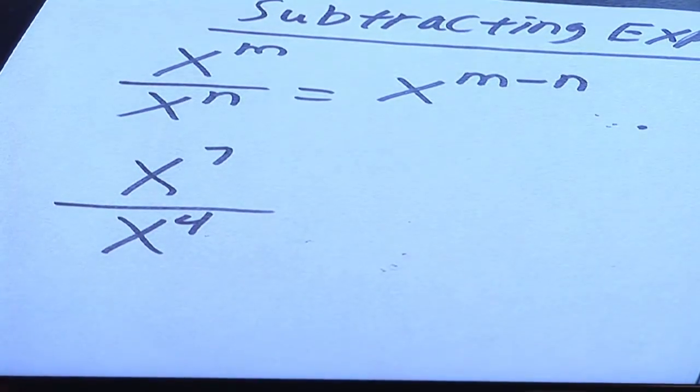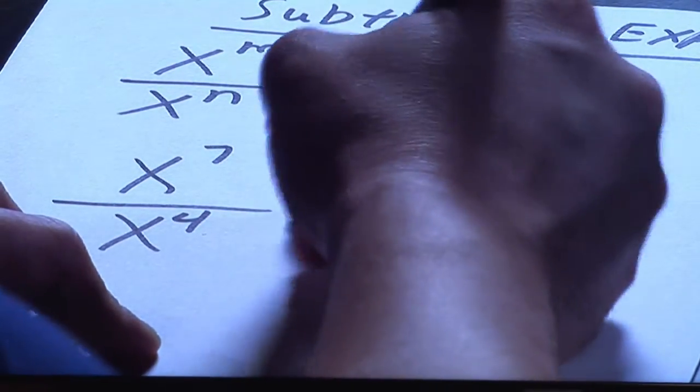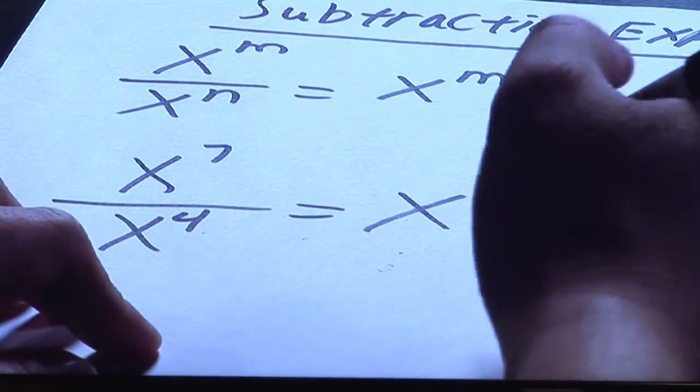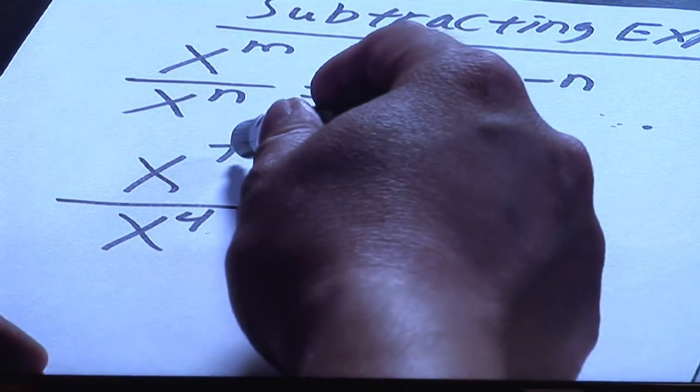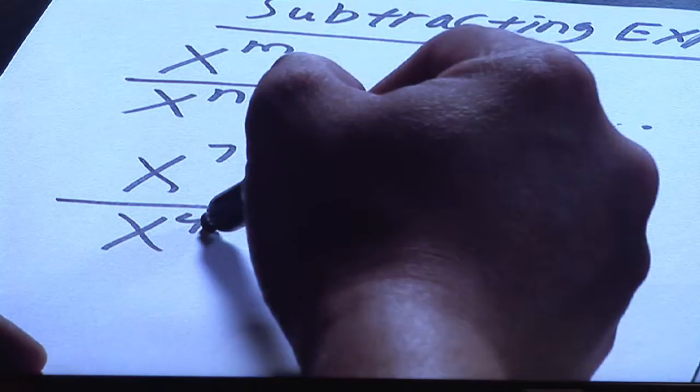Suppose you have x to the seventh over x to the four. Now, to rewrite this, all you need to do is have your x and then, like I said earlier, it's the top number minus the bottom number.